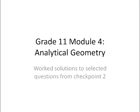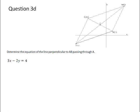We're going to have a look at the worked solution to question 3D from checkpoint 2. You were given the parallelogram ABCD, and in question D, you were asked to determine the equation of the line that is perpendicular to AB and passes through point A.